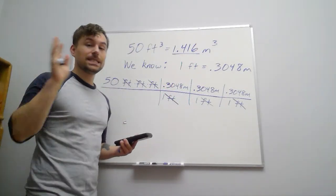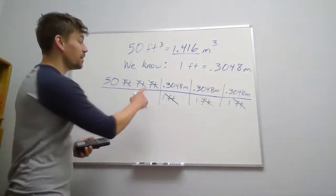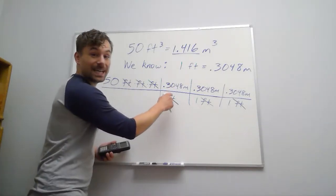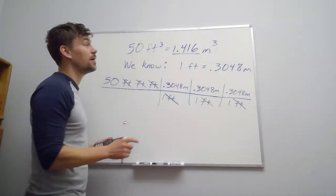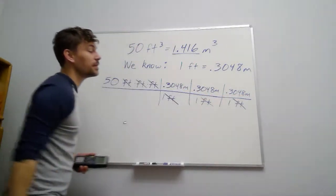And it's always a good idea to wait until the end to round. So don't multiply this first one, and then round, multiply the next one, and then round. That's potentially going to cause some problems. So multiply everything through, and then round all the way at the end.